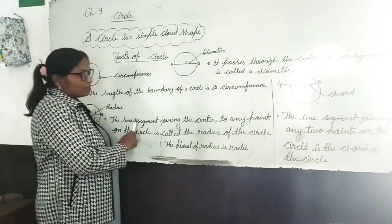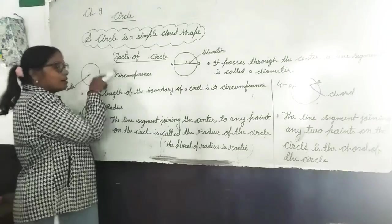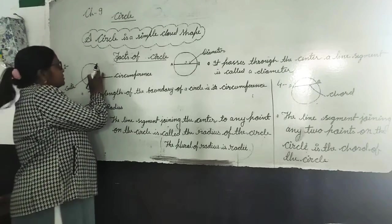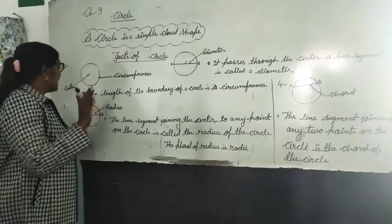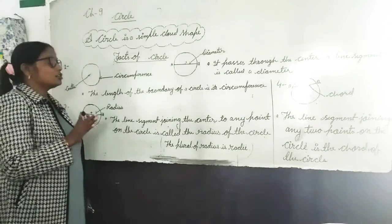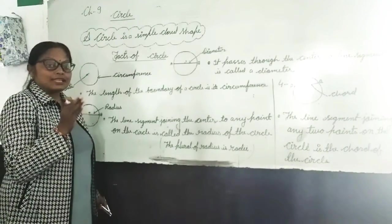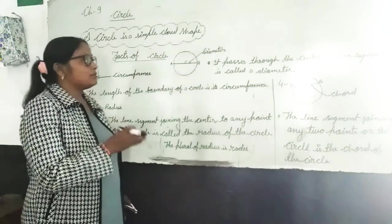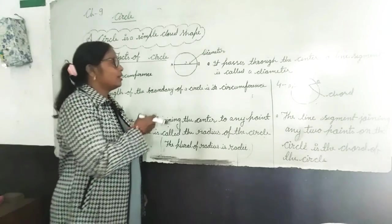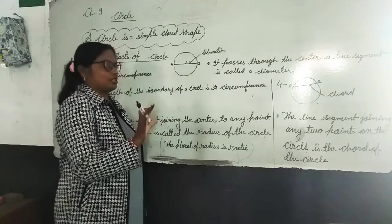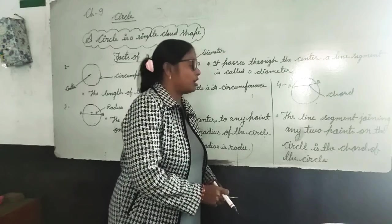So to recap: the fixed point when drawing a circle with a compass is the center; the length of the boundary is the circumference; the line segment joining the center to any point on the circle is the radius, and its plural is radii; a line segment passing through the center joining two points is the diameter; and the line segment joining any two points on the circle is the chord.